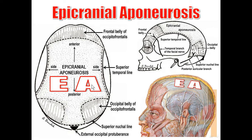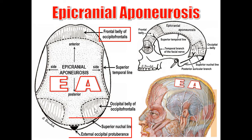Regarding the epicranial aponeurosis: it is attached anteriorly to the frontal belly of the occipitofrontalis, which is attached to the skin over the eyebrow. Posteriorly, it is attached to the occipital belly of the occipitofrontalis, and to the superior nuchal line and external occipital protuberance.